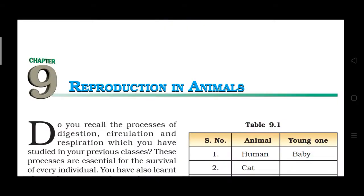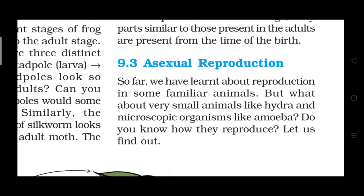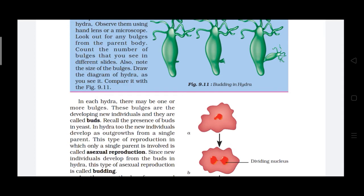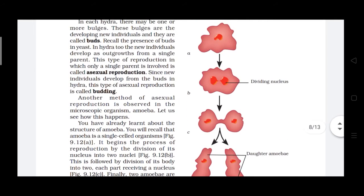Hello dear children, let us continue the chapter 'Reproduction in Animals.' There are two methods of reproduction: sexual and asexual reproduction. Sexual reproduction is the mode of reproduction in which the organism arises from two parents of the opposite sexes. We have learned about reproduction in familiar animals, but what about very small animals like hydra and microscopic organisms like amoeba? They reproduce asexually. Asexual reproduction is the mode of reproduction in which the organism arises from a single parent. Budding and binary fission are the common methods in asexual reproduction.